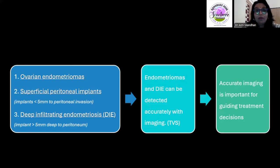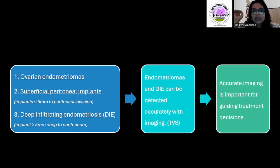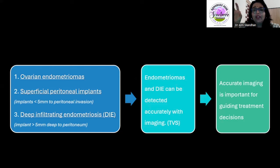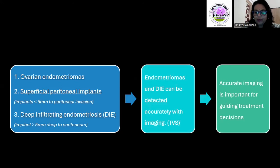It is very important to have accurate imaging because it will help surgeons in planning. Especially with adhesions in place, it is very difficult for surgeons to navigate through the abdomen. Being able to tell them where these implants lie helps them plan their technique and approach.